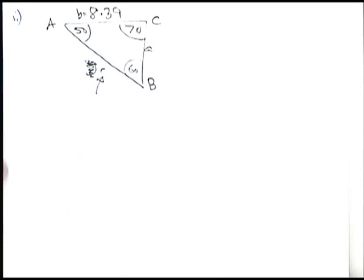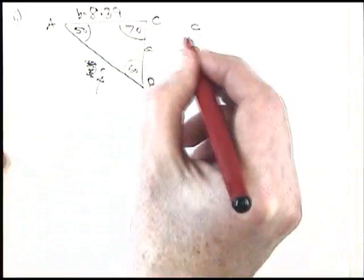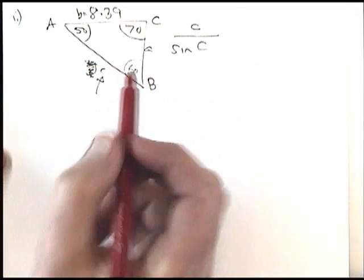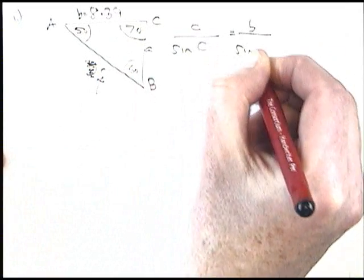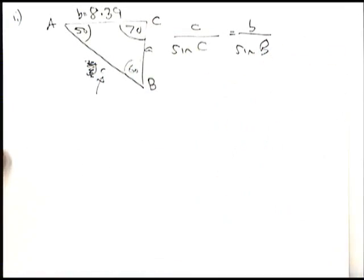So I need to write the sine rule down with the small letters on the top. And the pair I'm interested in is c and also b. So that's the sine rule written down.